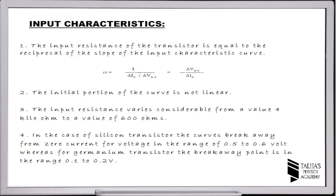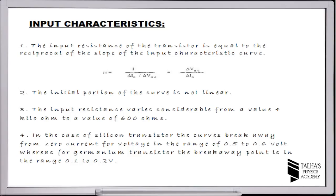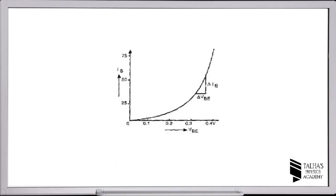Point number two: the initial portion of the curve is not linear, as you can see in the picture. Point number three: the input resistance varies considerably, from a value of 4 kilo-ohms to a value of 600 ohms. Point number four: in the case of a silicon transistor, the curves break away from zero current for a voltage in the range of 0.5 to 0.6 volt.